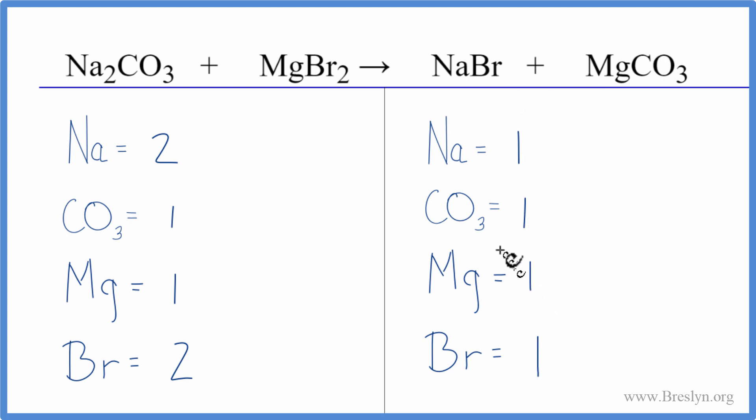It looks like all we need to do is put a coefficient of two in front of the NaBr. So we have one times two, that'll give us two Na's, one times two, that gives us two Br's, and that's all we have to do.